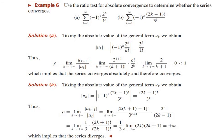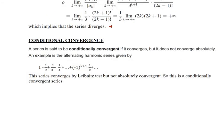Finally, conditional convergence: a series is said to be conditionally convergent if it converges but does not converge absolutely. An example is the alternating harmonic series: 1 − 1/2 + 1/3 − 1/4 + ... + (−1)^(k+1) · (1/k) + ... This series converges by Leibniz's test but is not absolutely convergent, so it is a conditionally convergent series. That's all from this part, thank you.